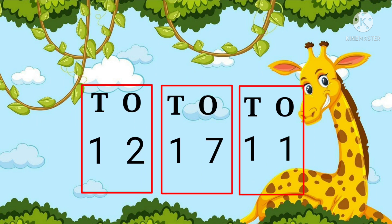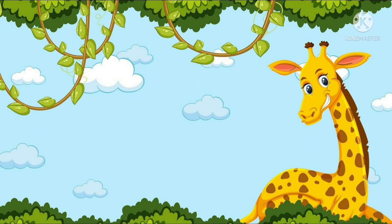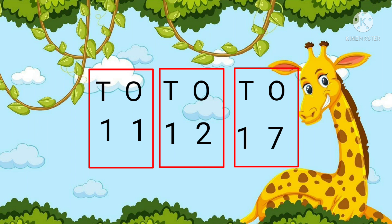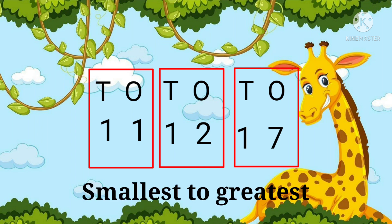Let's take the numbers 12, 17, and 11, which we have to arrange in ascending order — that is from smaller to bigger. To compare the numbers, we follow our first rule: check the number of digits. Since the number of digits are the same, we go to the next rule: check the numbers in the tens place. Since there is only one in all the tens places, we go to the next rule: compare the numbers in the ones place. Here we can see that the smaller number is 1 and the greater number is 7.